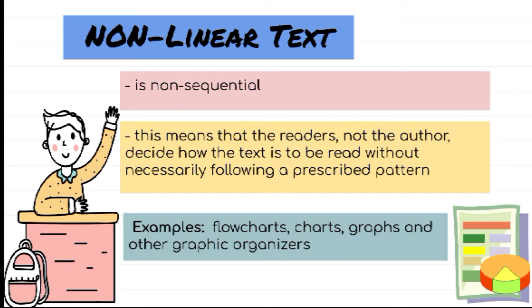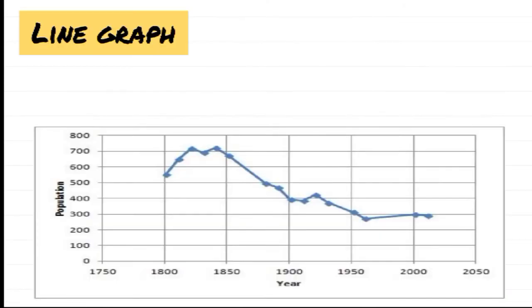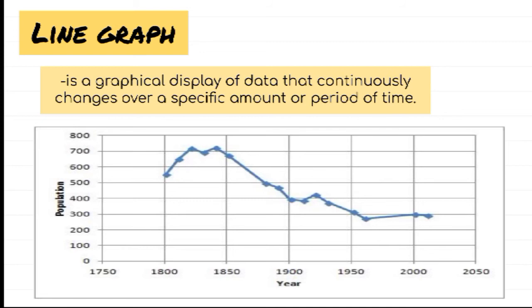One of the examples of non-linear text is a line graph. It is a graphical display of data that continuously changes over a specific period of time. The line or lines represent movement and may ascend or descend depending on the trend they show.